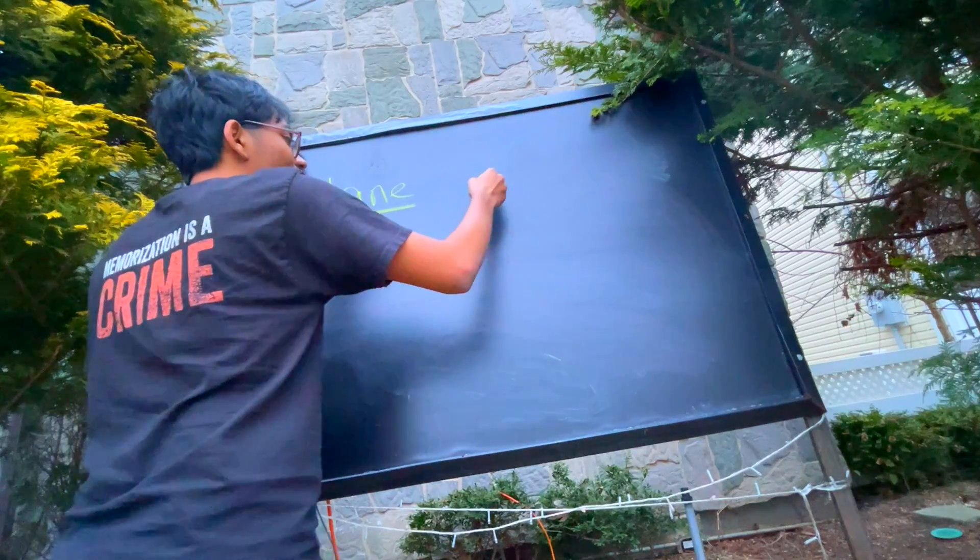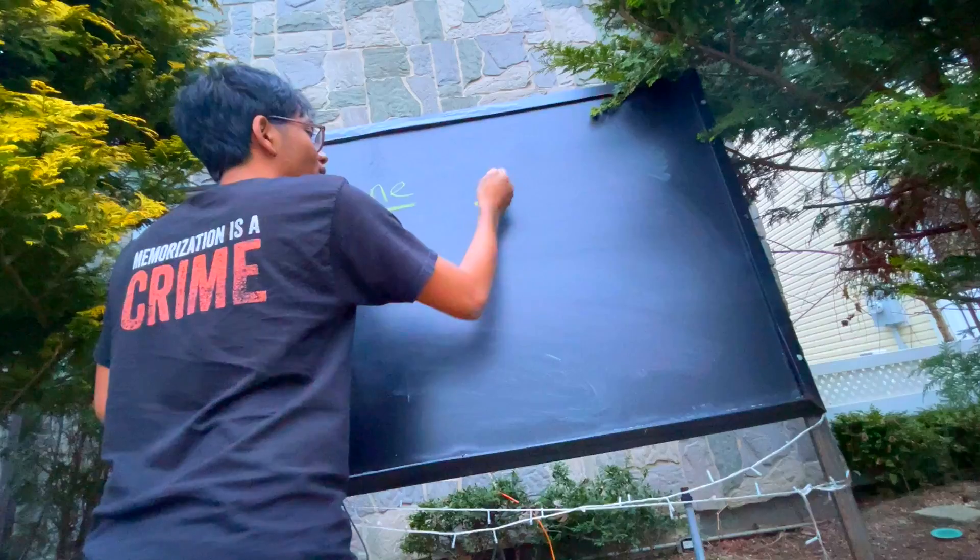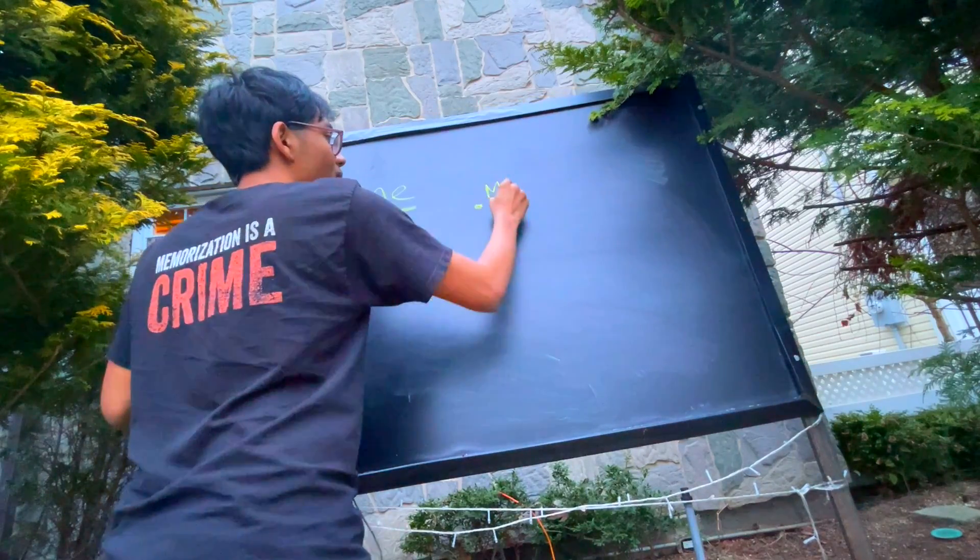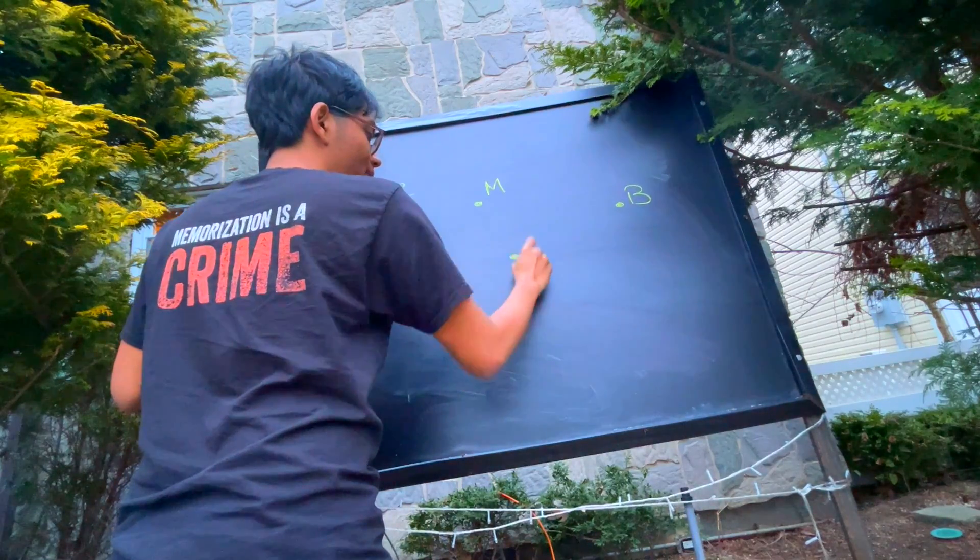So let's say we have a plane right here. Remember a plane is made up of at least three points. So here's my first point, I'll call it M. Here's my second point, I'll call it B. And here's my third point, I'll call it P.